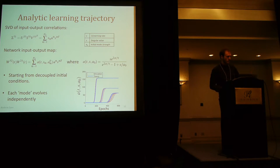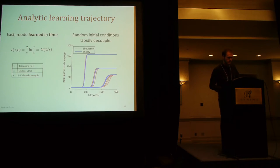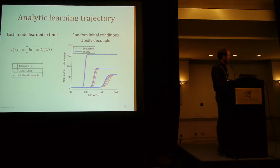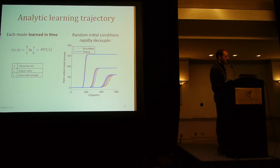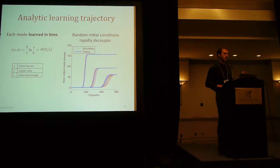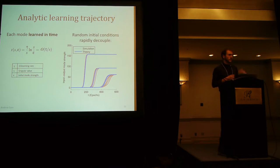This is all for a special set of very balanced, decoupled initial conditions. One thing we can do with this is talk about learning time — how long it takes to learn one particular mode. It turns out it's proportional to 1 over the size of the singular value. This is a very intuitive result: if your input-output map is a very strong correlation, you learn that faster in roughly proportional time.